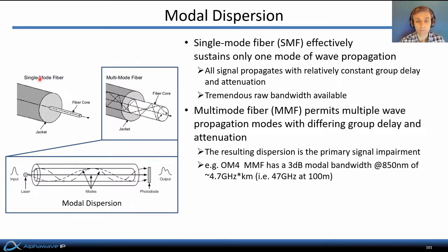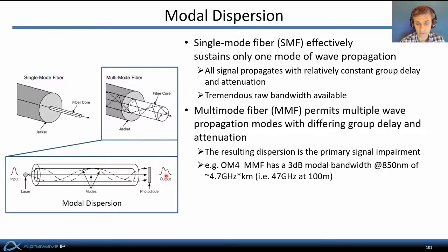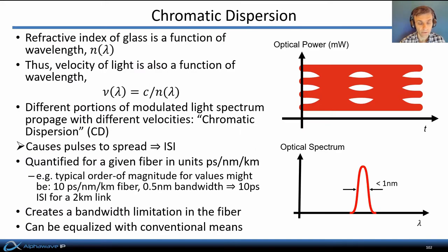Single-mode fiber effectively sustains only one mode of light wave propagation due to its narrow diameter, so all signals propagate with relatively constant group delay and attenuation. Single-mode fiber therefore offers tremendous raw bandwidth, especially for long reaches. Multi-mode fibers, as the name suggests, permit multiple wave propagation modes, each with differing group delay and attenuation. As a result, incident pulses split into multiple received pulses over long reaches, and the resulting dispersion — called modal dispersion — is the primary signal impairment. For example, a class OM4 MMF has a 3 dB modal bandwidth at 850 nanometers of around 4.7 gigahertz·kilometers, meaning a bandwidth of 47 gigahertz over a reach of 100 meters.